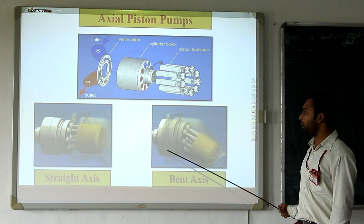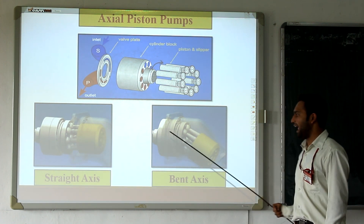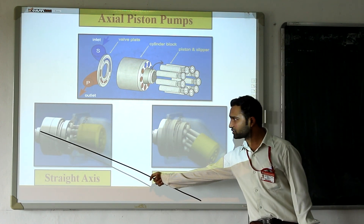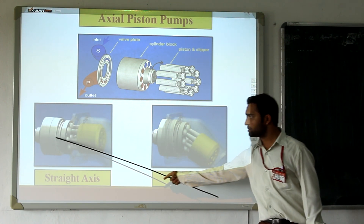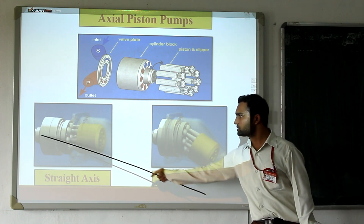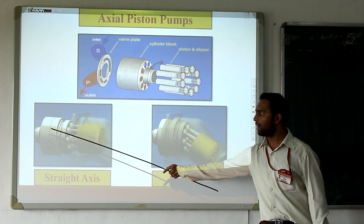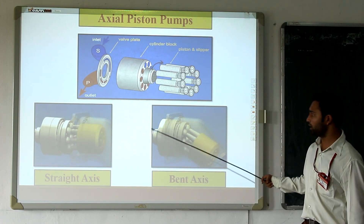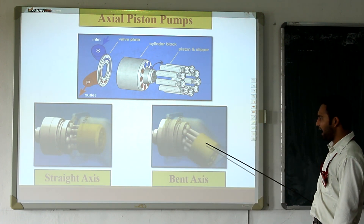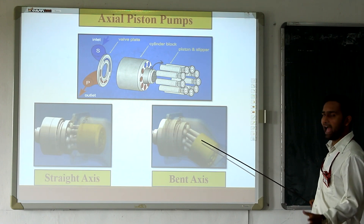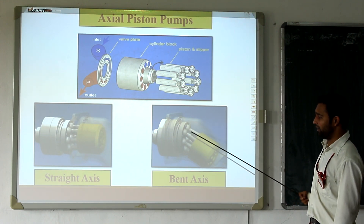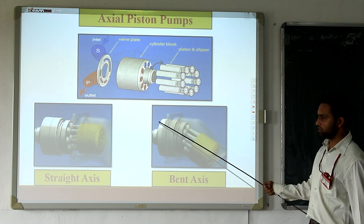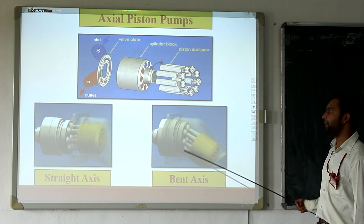The axial piston pump covers two types: straight axis form and bent axis form. In case of straight axis form, it is called straight axis because the cylinder block axis and the drive shaft axis have the same axis direction. In case of bent axis form, the cylinder block axis and the drive shaft axis have a variation in angle, and that is why it is called bent axis form.